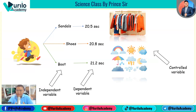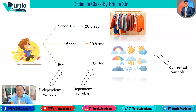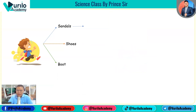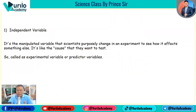The controlled variable is what I keep the same during the experiment. If I am doing this experiment or research, the variable I change is the independent variable, and the dependent variable is the one I observe as a result of that change.